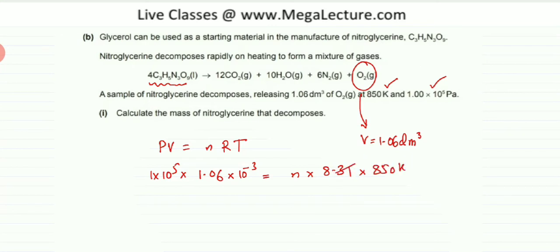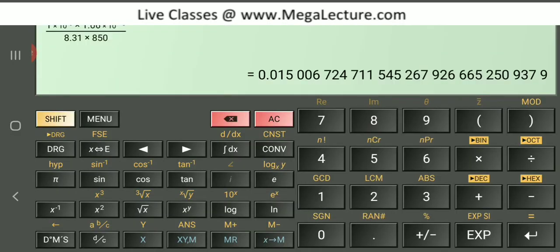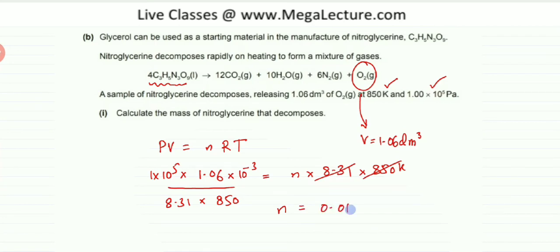So what I need to do is get rid of this, divide this entire thing by 8.31 and multiply it by 850. And we are going to find the moles of n now. So here as you can see I have done my calculations. And you can see I am getting a value of 0.015 moles. To three significant figures it's going to be 0.0150 moles.